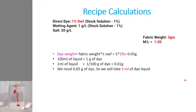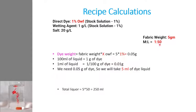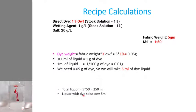An important consideration: the total liquid was calculated as 5 g × 50 = 250 ml. However, we cannot simply add 250 ml to the dyeing bath, because the 5 ml of dye stock solution also contributes to the total liquid volume. If we add 250 ml first and then the 5 ml dye solution, the material-to-liquor ratio will no longer be 1:50. Therefore, we subtract the dye solution volume — in this case 5 ml — from 250 ml, and add only 245 ml of water.